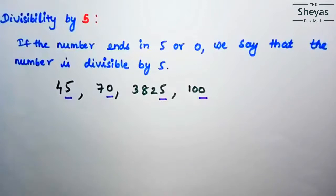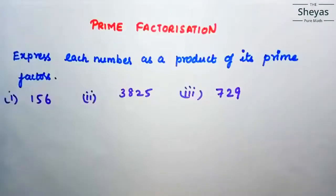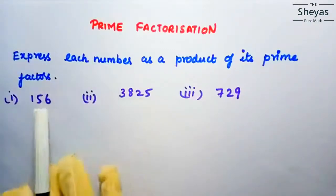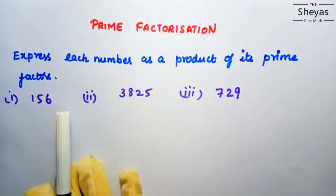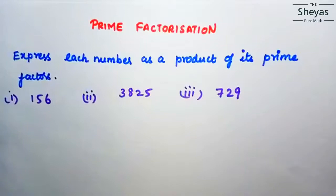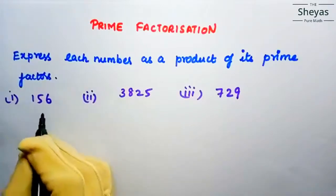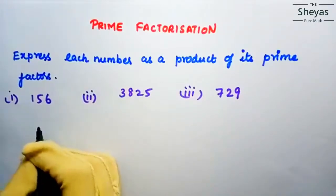Now let us start doing prime factorization. Prime factorization means to express each number as a product of its prime factors. Let us start with the first one, 156.